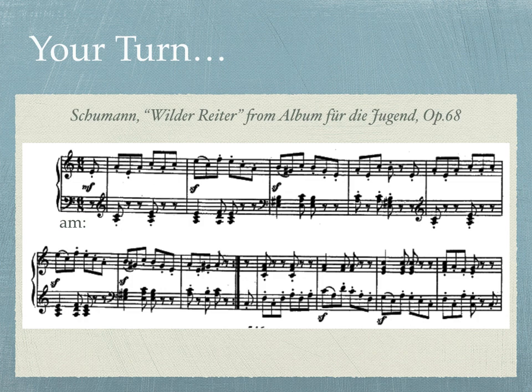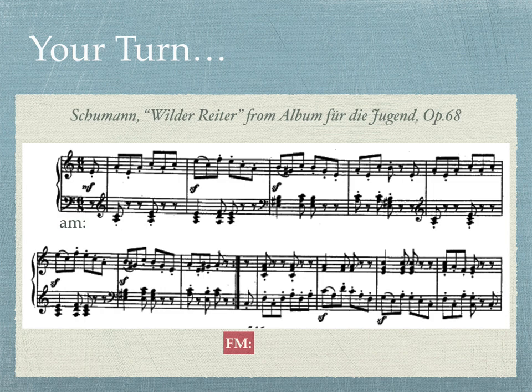Now it's your turn to practice. Listen to this example from Schumann's Album for the Young beginning in A minor, and try to detect which type of modulation is occurring here. Pause the video if you need more time. If you heard a sudden modulation to F major after the repeat sign, you have detected a direct modulation, or a phrase modulation. This modulation has no connection to the previous passage and just begins in a new key.